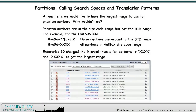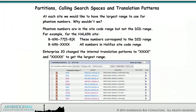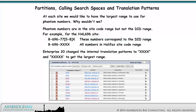At each site, we would like to have the largest range to use for phantom numbers. Phantom numbers are in the site code range, but not in the DID range. For example, for the HAL 696 site, 8-696-7775 to 8-696-XXXX — these numbers correspond to the DID range 8-696-XXXX, all numbers in the Halifax site code range.